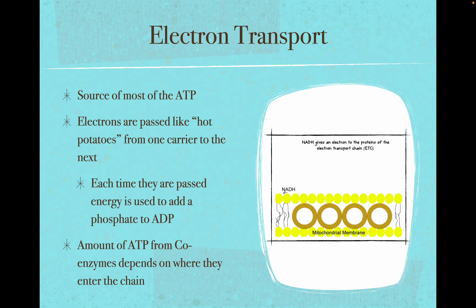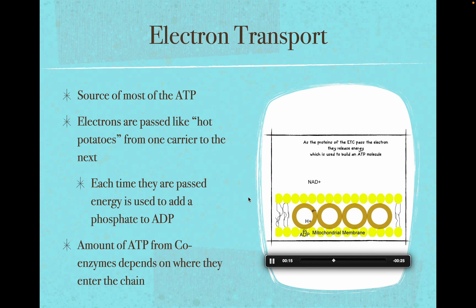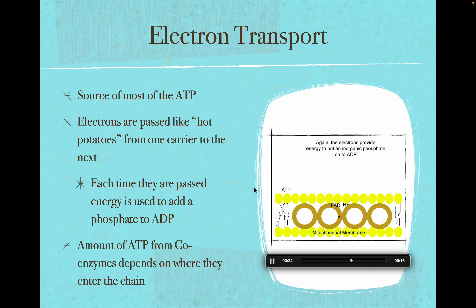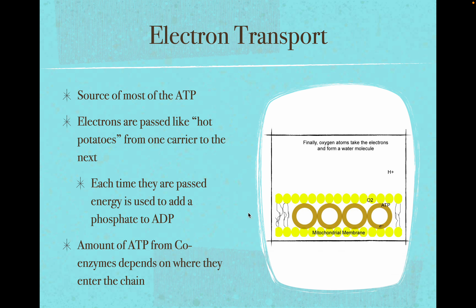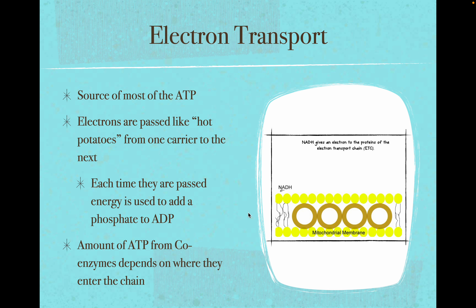In electron transport, we have a series of molecules embedded in a membrane called cytochromes that pick up high-energy electrons from NAD and FAD, pass those electrons along, and as they pass, the energy is used to put a phosphate on ADP to make ATP. This continues until you reach the last cytochrome, which gives the electron to an oxygen. The oxygen combines with hydrogen ions to form water. This is where we get the bulk of our ATP.